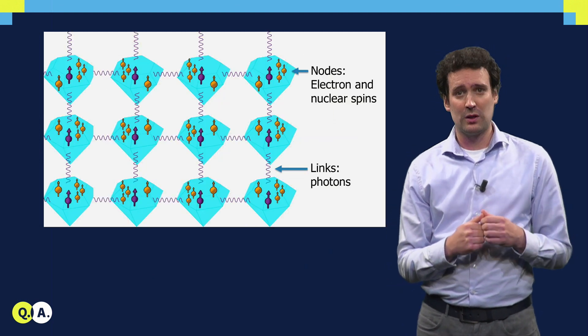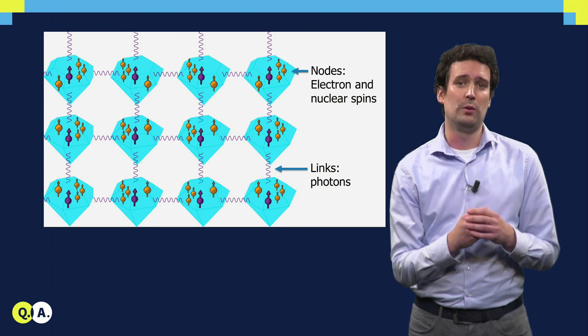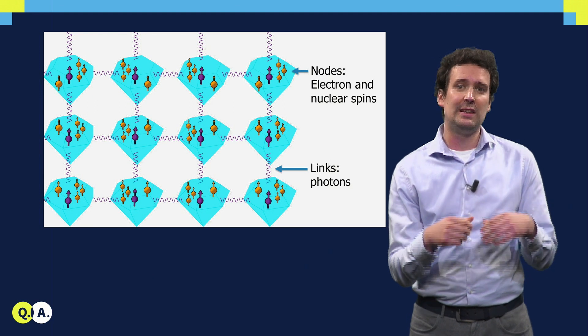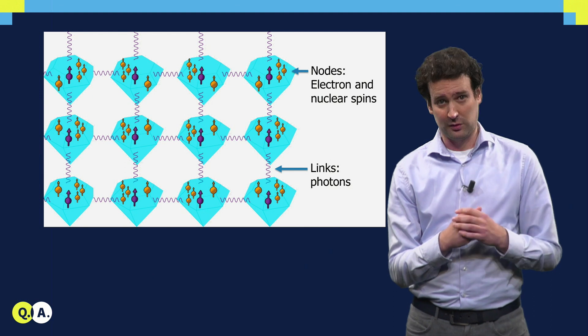In a quantum network, we have nodes that consist of multiple spins or qubits that can store and process quantum states, and we can then link these together using optics into a network. This is a very exciting approach.